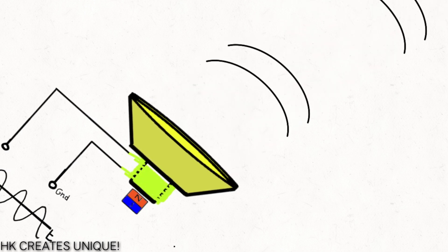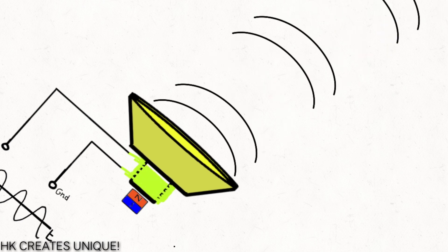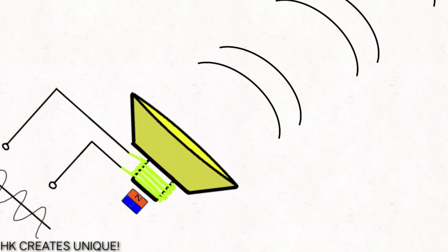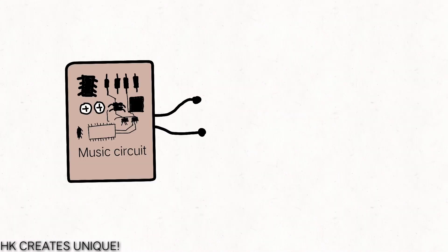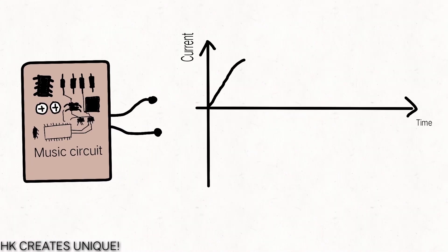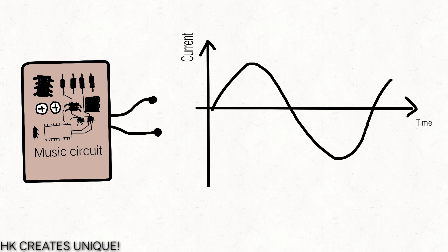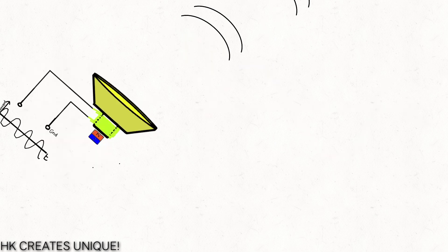So we successfully created a vibrating diaphragm using electricity, which can actually produce sound waves. There are some circuits that can create continuously changing current precisely to make the diaphragm of a speaker vibrate and produce sound.